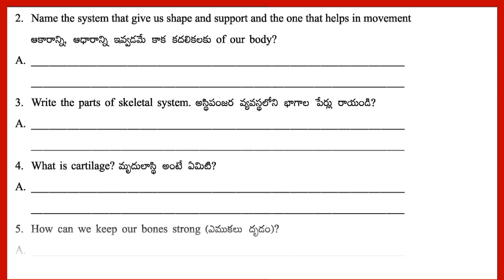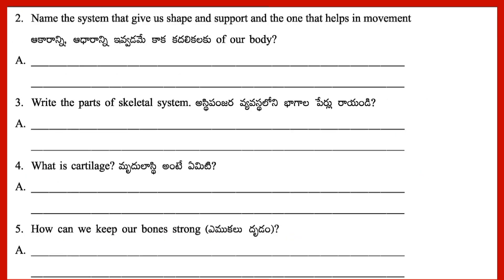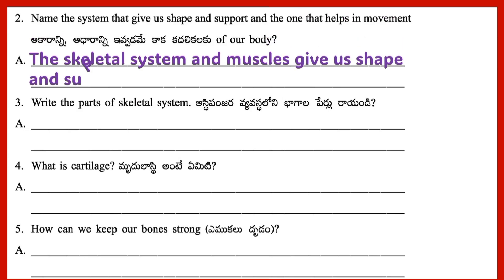Question 2: Name the system that gives us shape and support and helps in movement. Answer: The skeletal system and muscles give us shape and support and help in movement of our body.